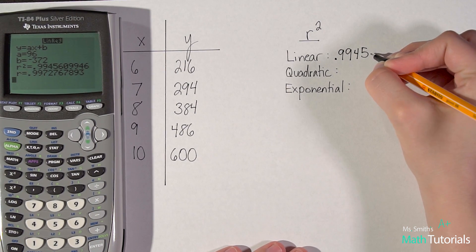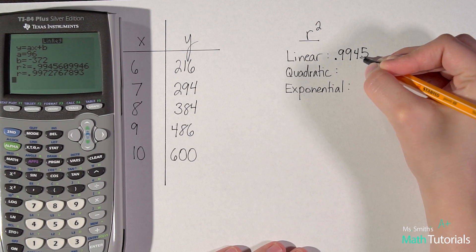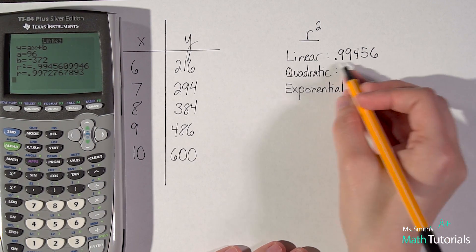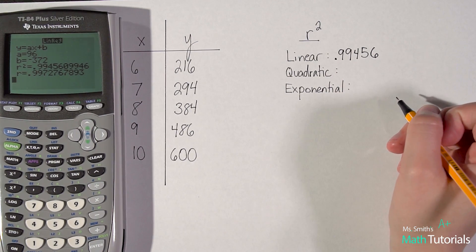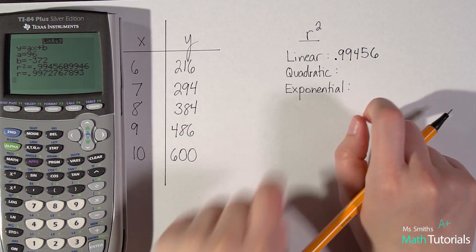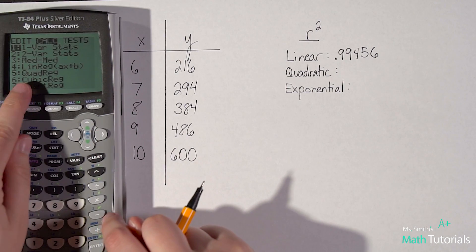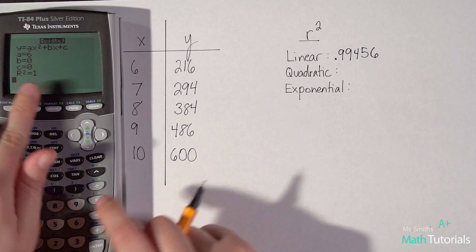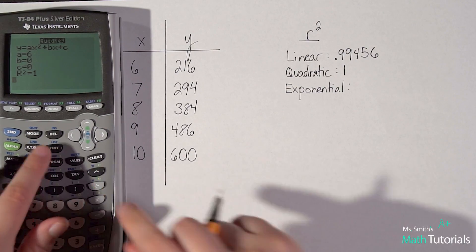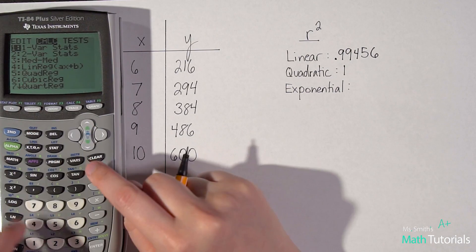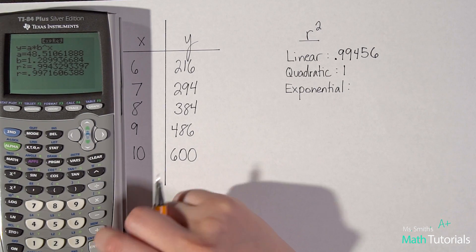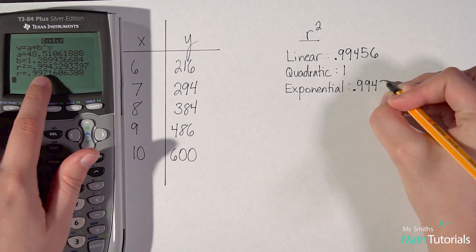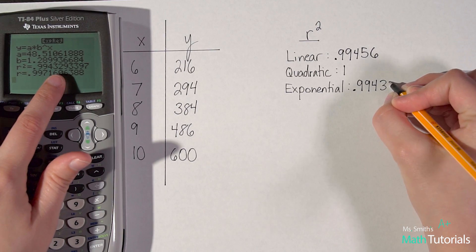I see that the R squared for linear is 0.994. You want to get a number of these decimal places, 4, 5, and 6 should be enough. Sometimes we have to extend it pretty far. We got our linear R squared value. Let's look at quadratic now. I'm going to go back to stat calc. This time I'm going to try quadratic 5, enter through all this. My R squared data here is 1. Let's go back and let's check exponential now. So I'm going to go to 0. My R squared value here is 0.99432 and then so on.